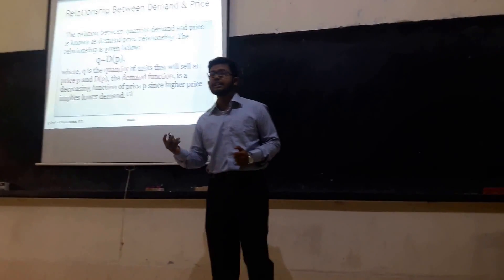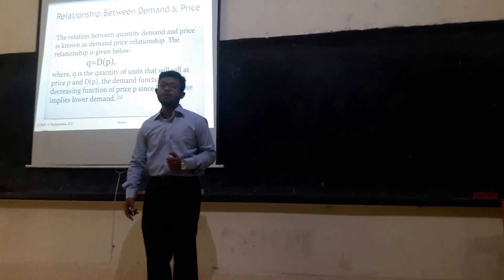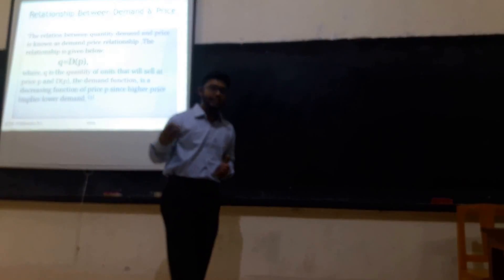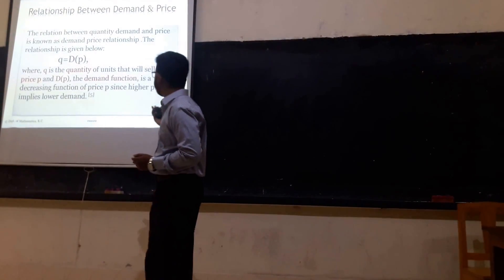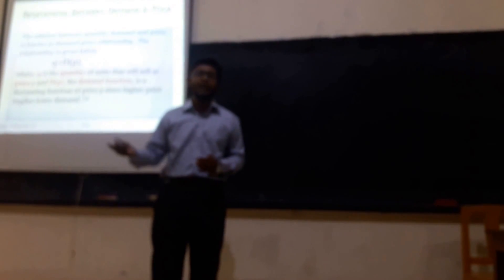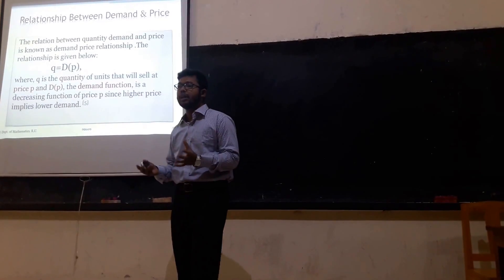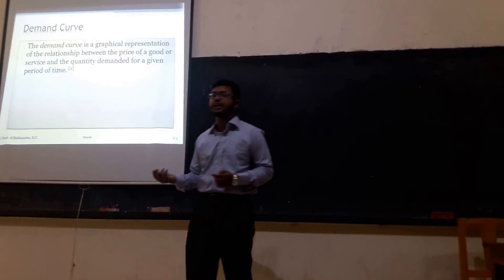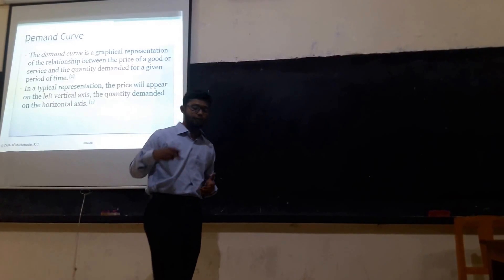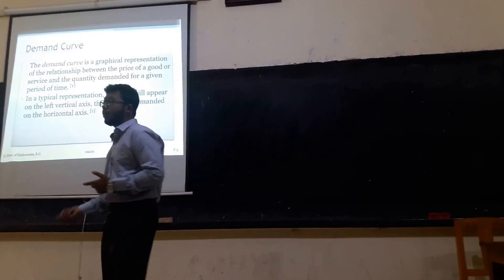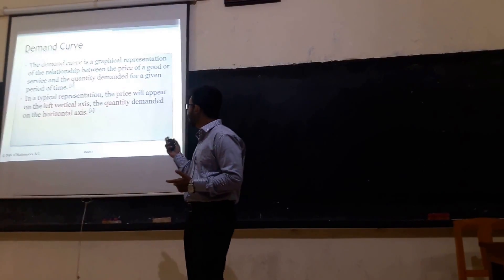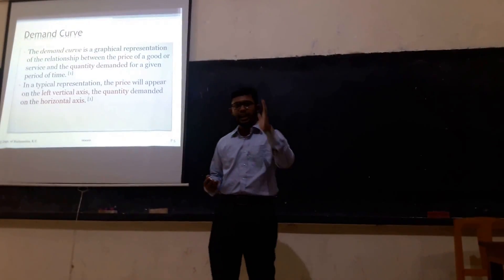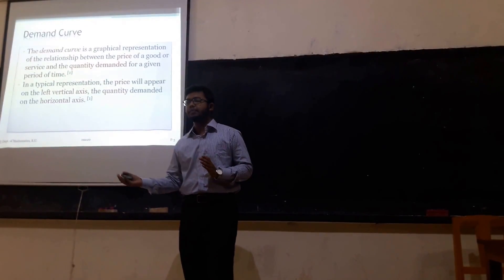The next slide shows the relationship between demand and price. We write Q_D as a function of P, where Q is the quantity demanded and P is the price of that good. D of P is a demand function of price, because a higher price implies lower demand. A demand curve is a graphical representation of the relationship between the quantity demanded and the price of a good over a given period of time. In a typical representation, the price appears on the vertical axis and the quantity demanded on the horizontal axis.